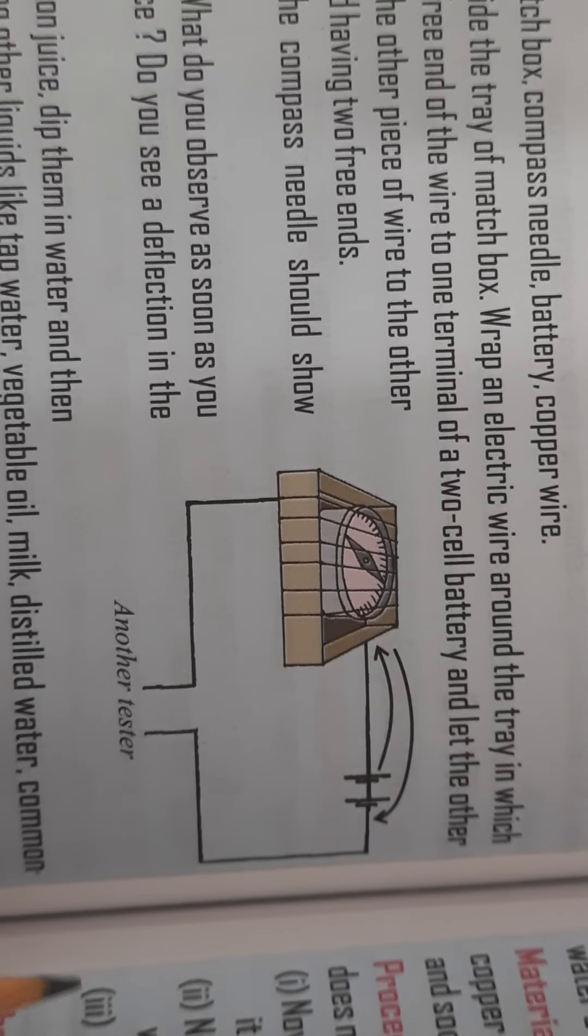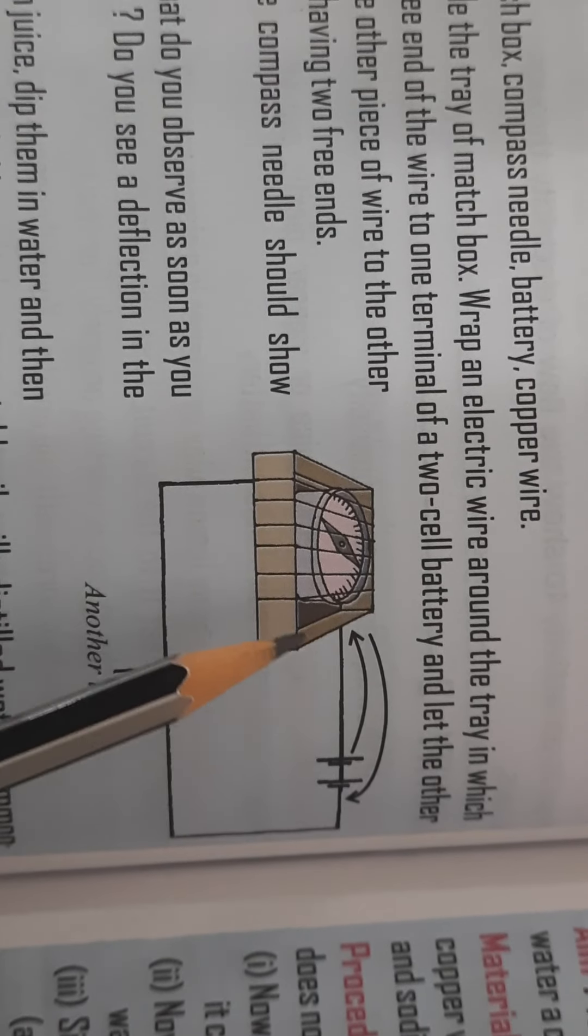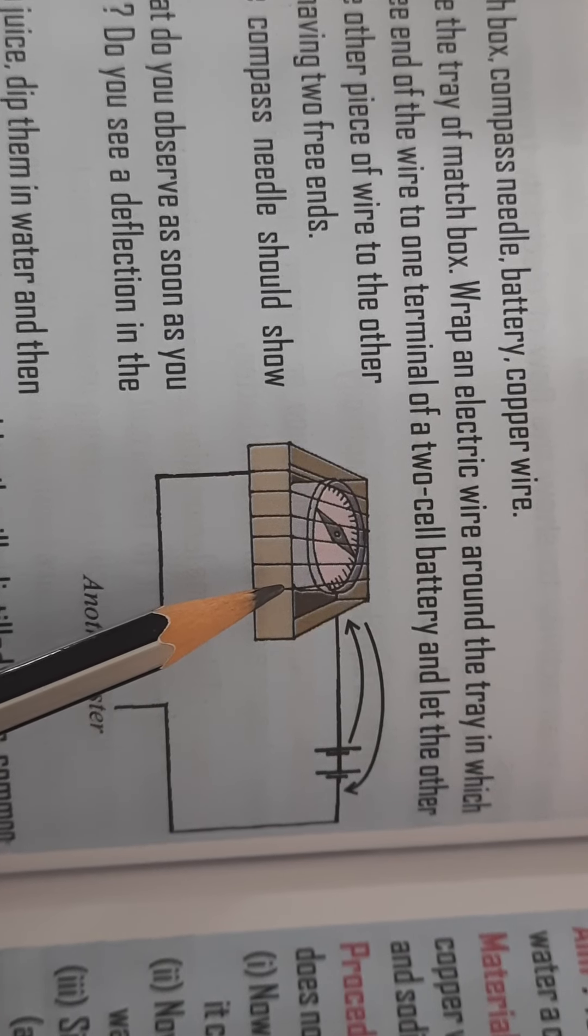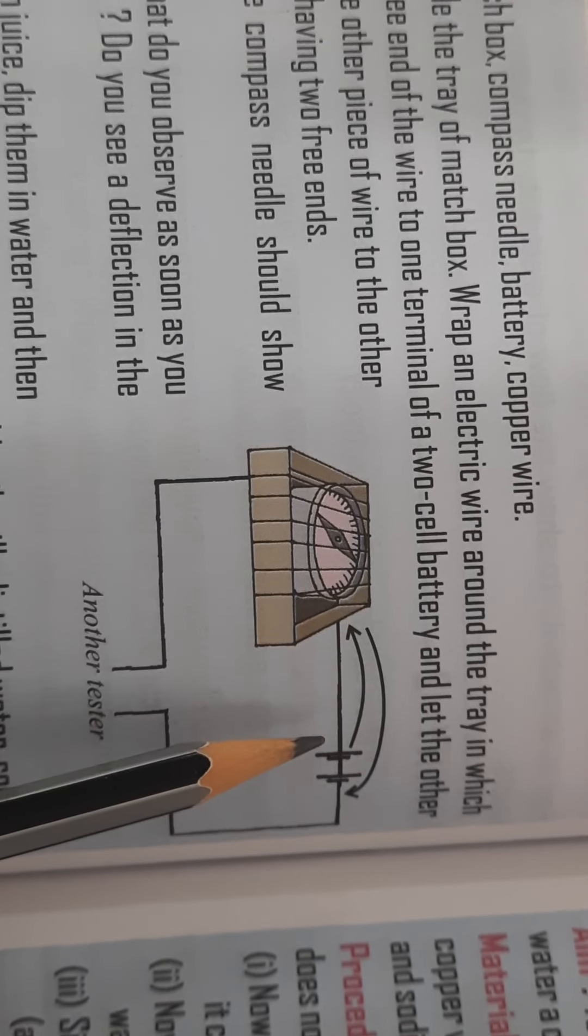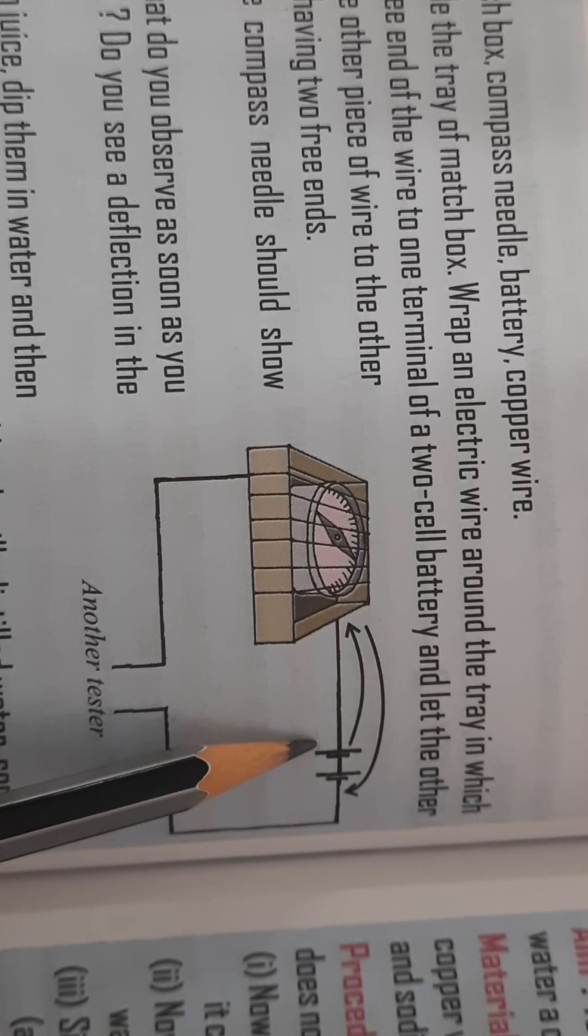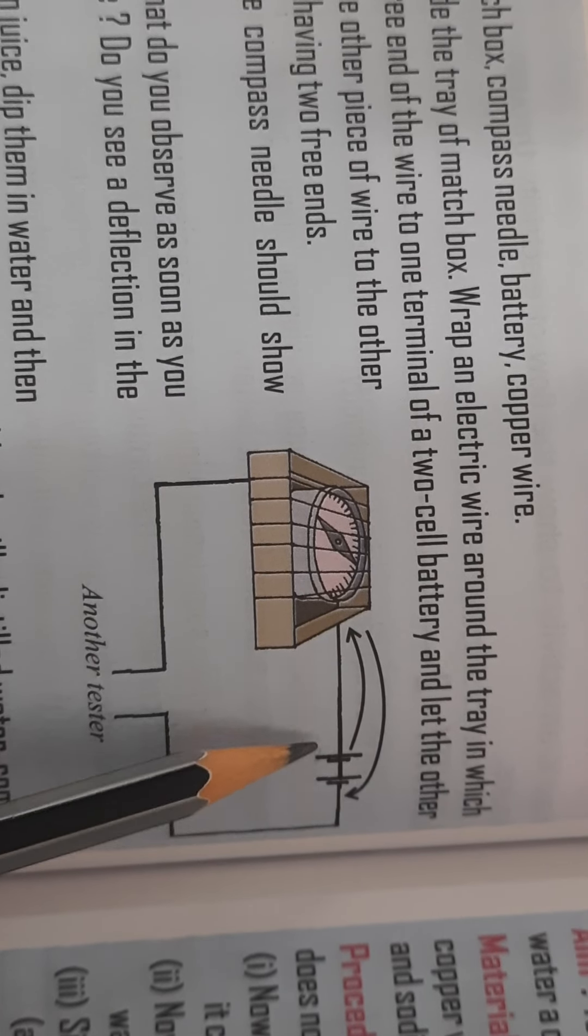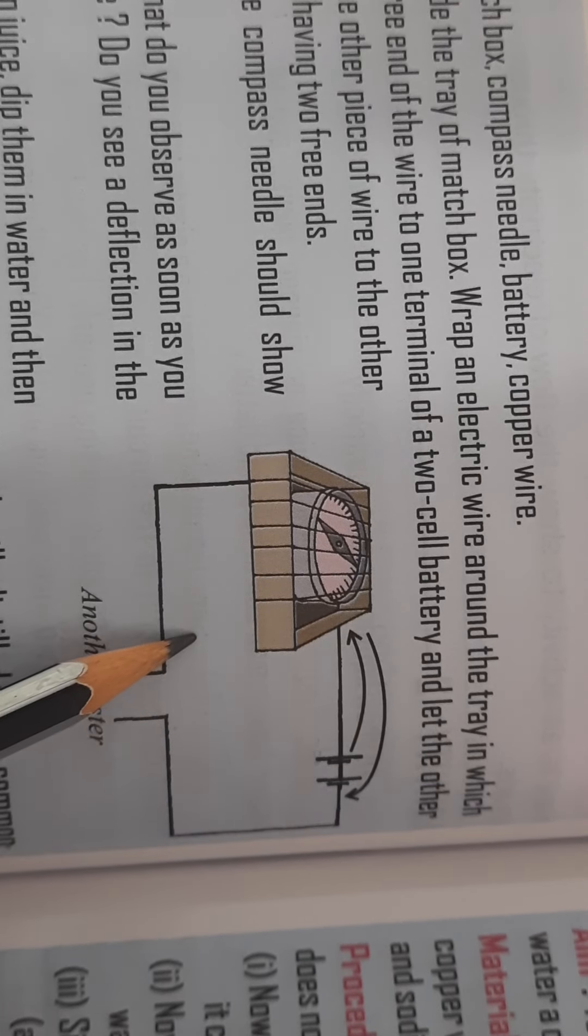What you have done is, you have taken a cardboard tray of matchbox. This is an empty matchbox. You have to take a compass needle, a battery, and then the wires.